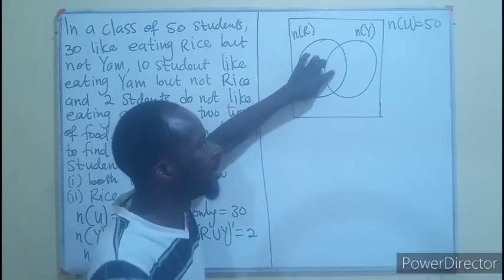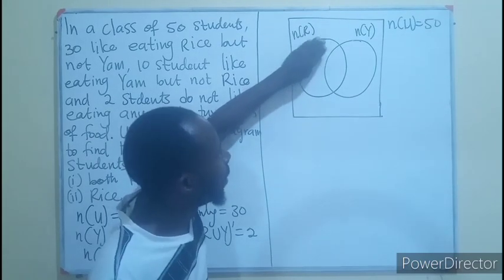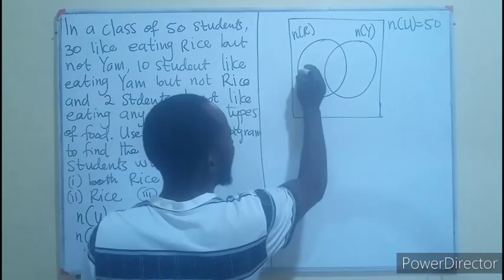You know that if we were to put 30 at this place, that would mean rice. So, this region would be rice. This region is also rice. But at the same time, it is a region for yam. So, they said rice but not yam, meaning only this region, which is the only we have here as well, 30.